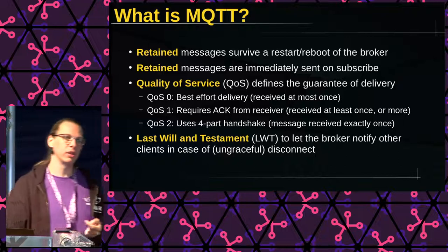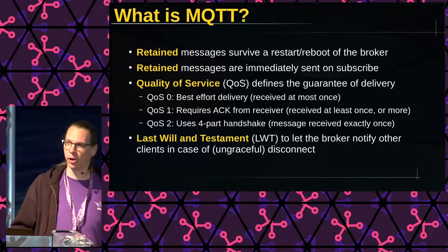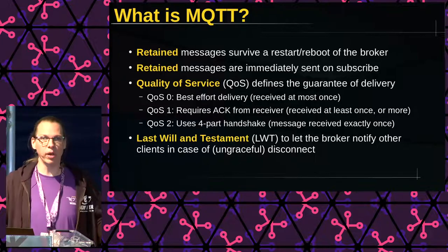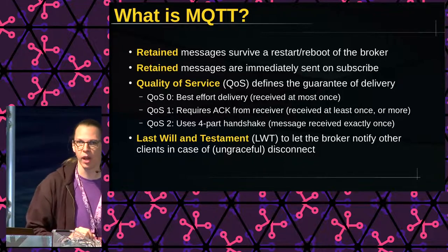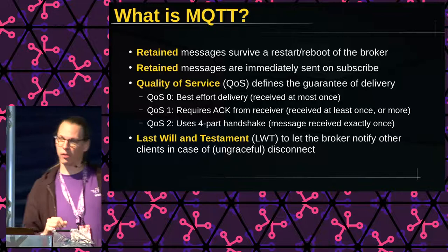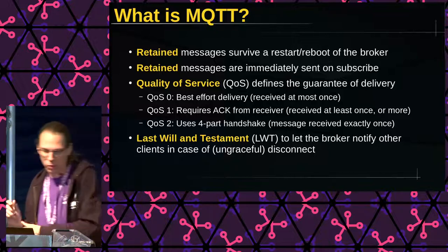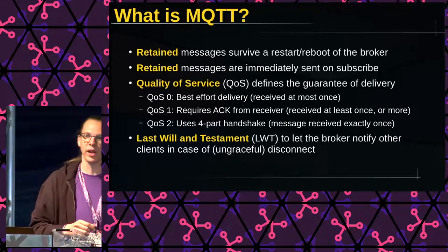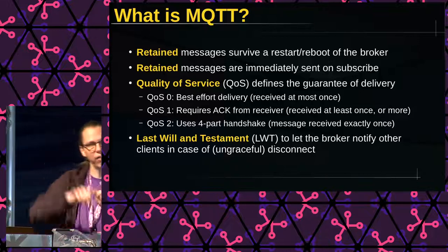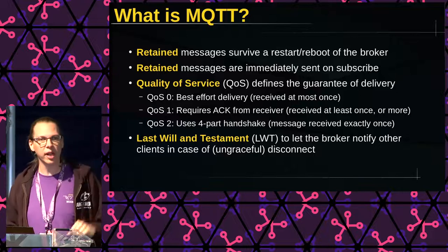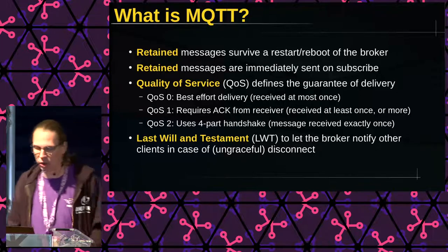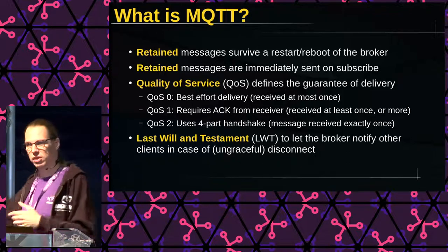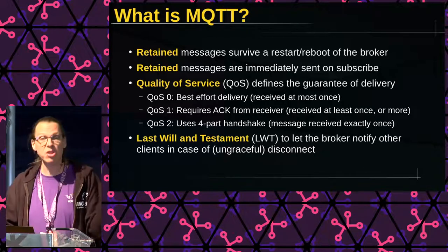Last Will and Testament is a method where you can, while connecting, tell the broker: if you lose connection with me, please inform others of my disappearance by sending this message to this topic. This enables you — in the original pipeline development — if at the other end the power is cut and the device disappears but only transmits an update every five minutes, you don't have to wait five full minutes to notice it's gone. You get a response within a couple of seconds because of the keep-alive to the broker not being updated, and then the broker notifies the rest of the world.